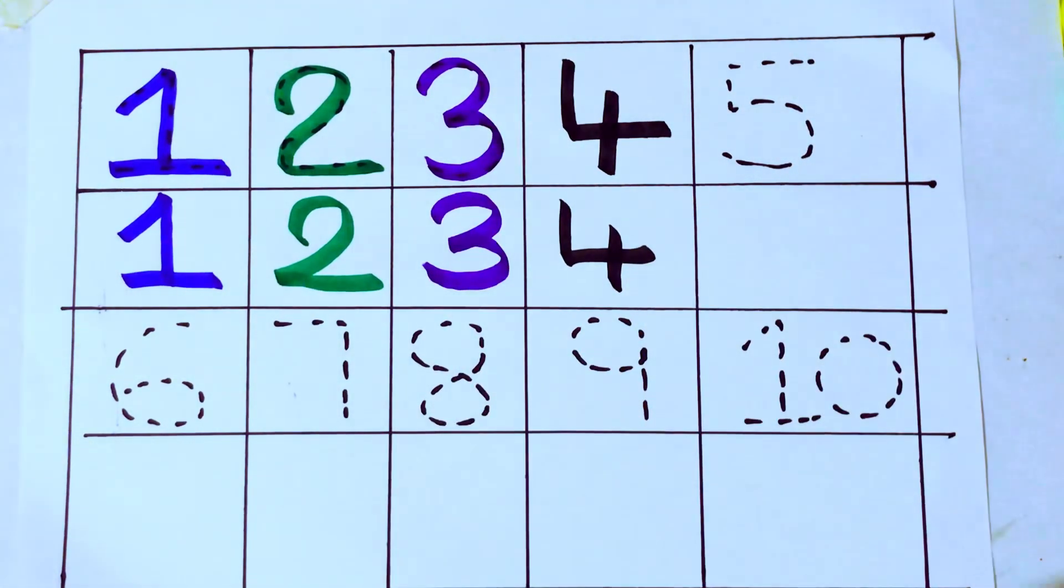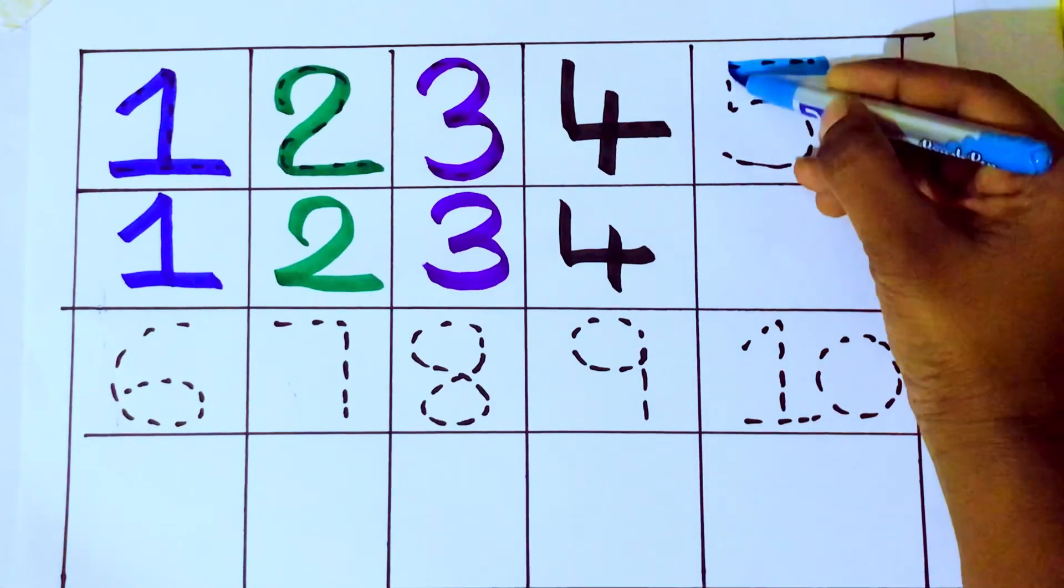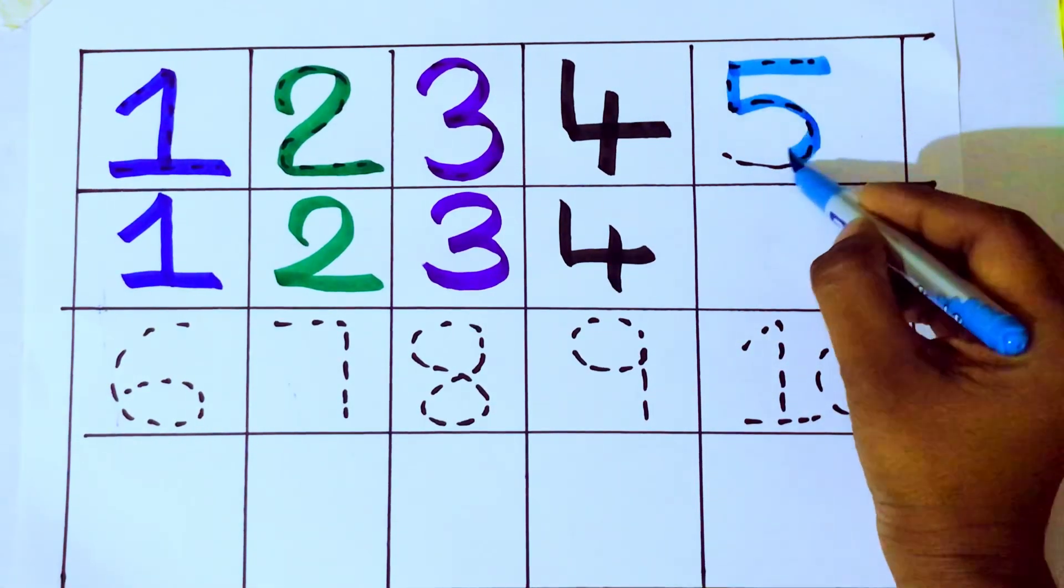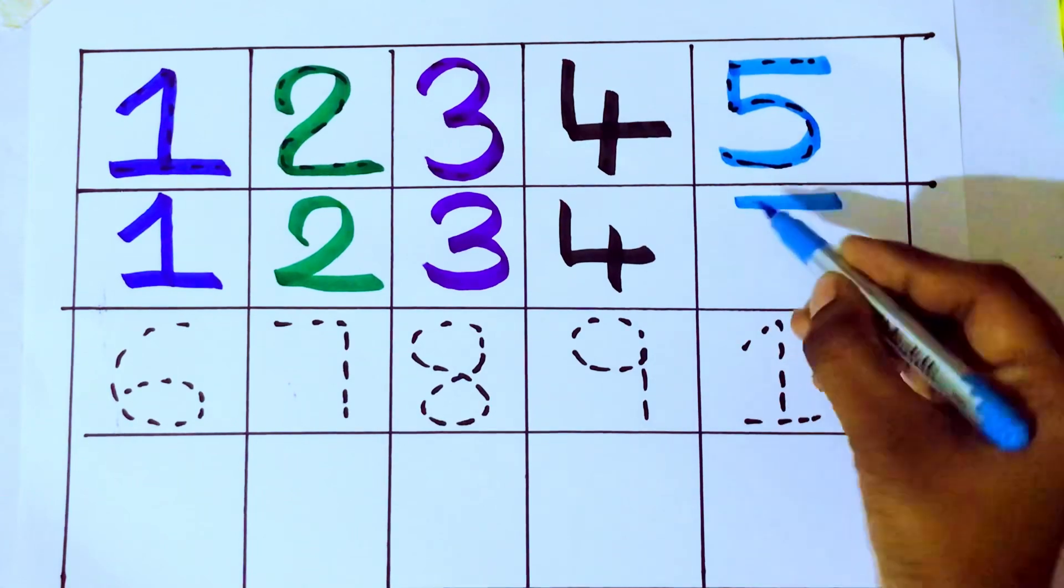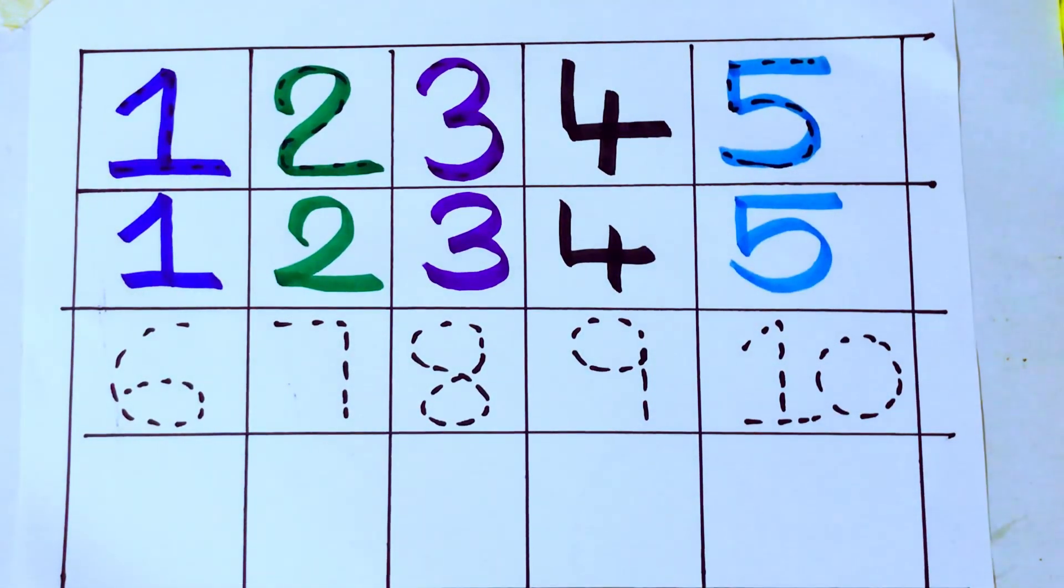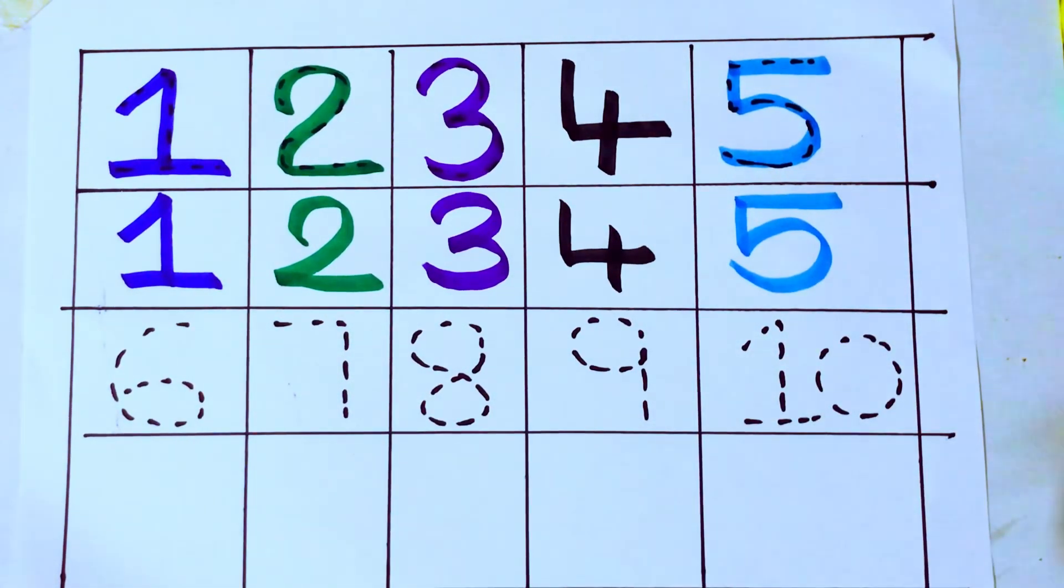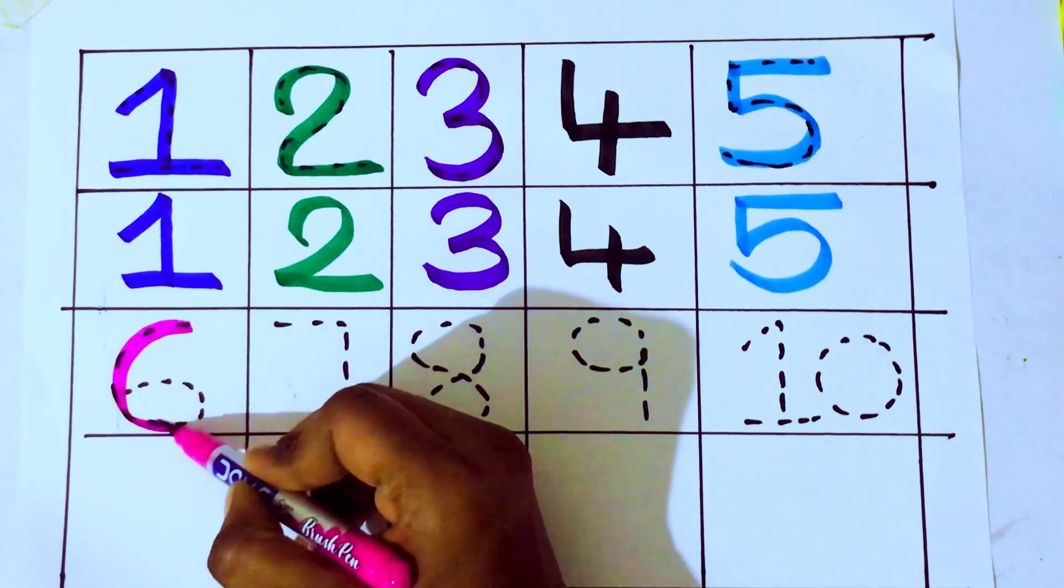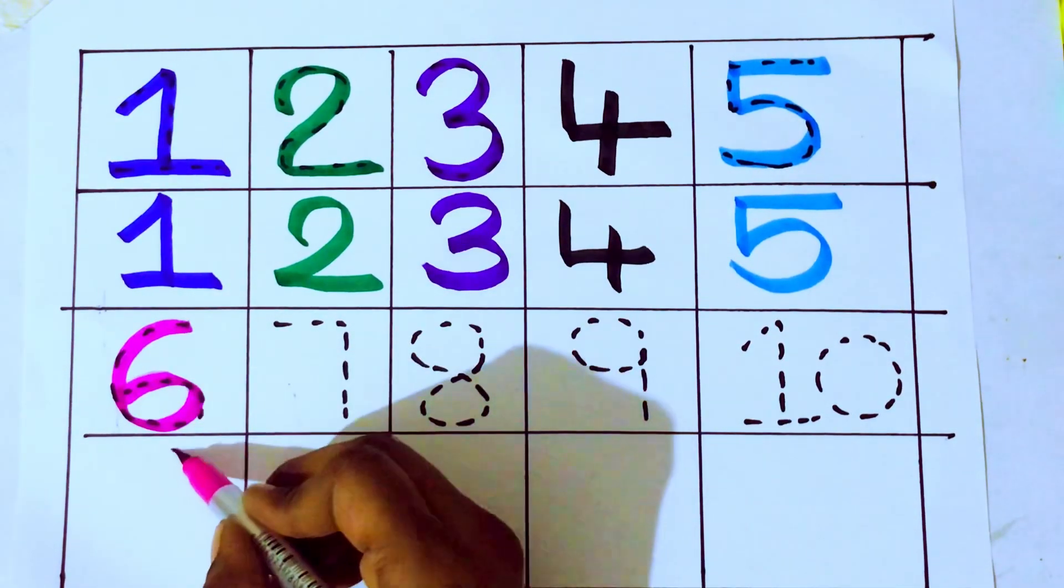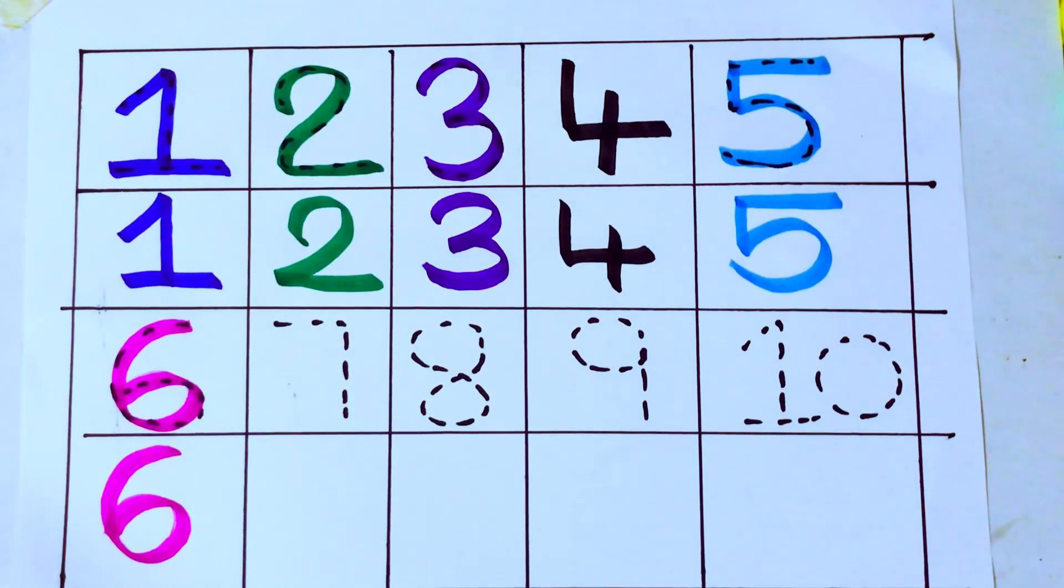Sky blue color. 5. 4 after 5. Which number kids? 5. F-I-V-E. 5. Pink color. Pink color. 5 after 6. S-I-X. 6. S-I-X. 6. Which number kids? 6.